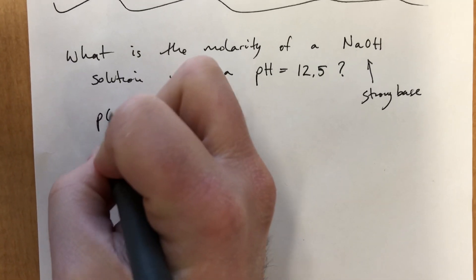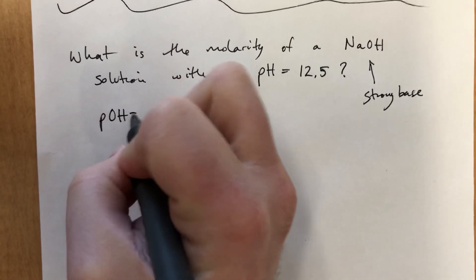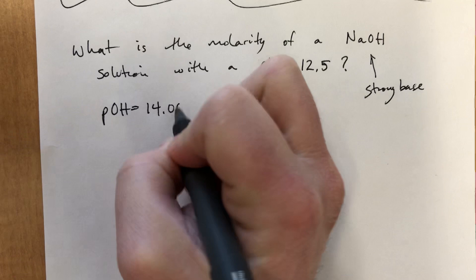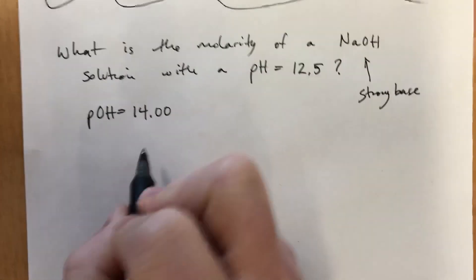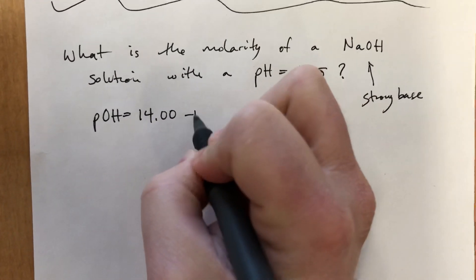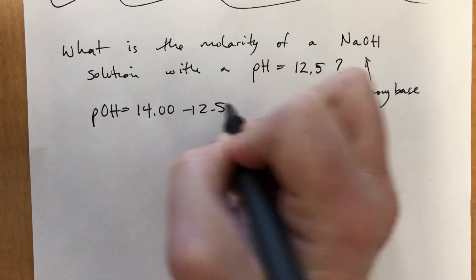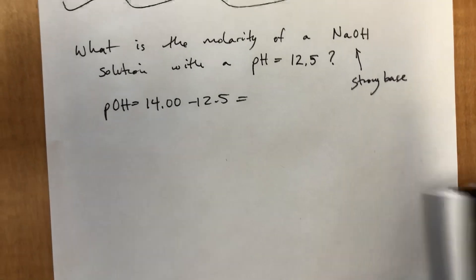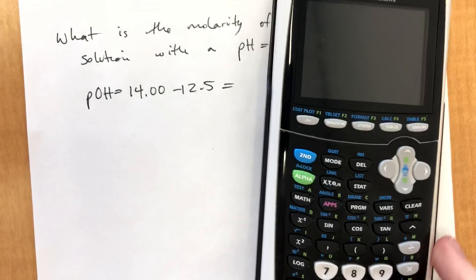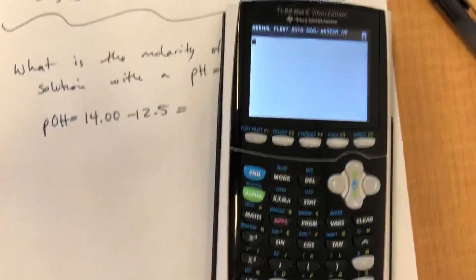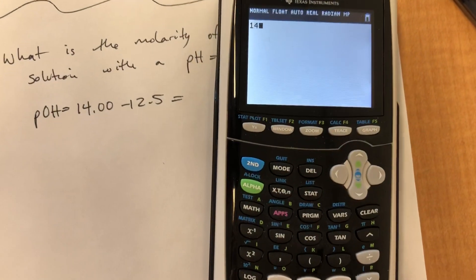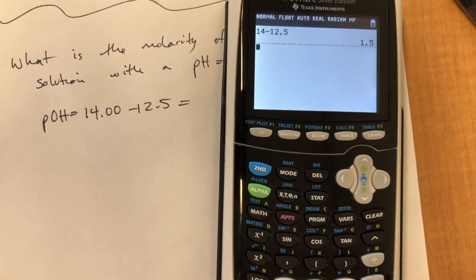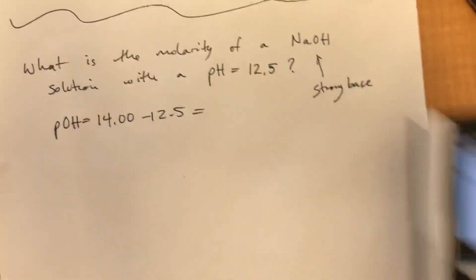pOH is equal to 14 minus the pH. So 14 minus 12.5 — 14 minus 12.5 — comes out to 1.5.